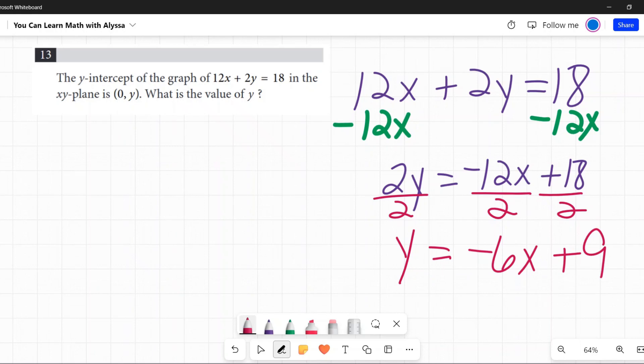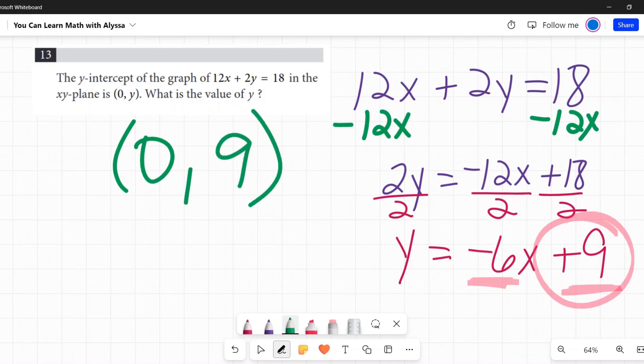So when you have something in the form of y equals mx plus b, the m constant next to the x is our slope, and the number that's all by its lonesome is our y-intercept. So here our y-intercept is 9.